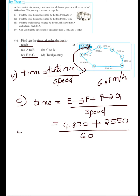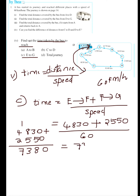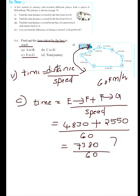First add the distances: 4830 plus 2550. That gives 0, 8, carry 1, 13, carry 1, 7 — so 7380 km. This equals 7380 km divided by 60. Now divide these two: 7380 divided by 60.